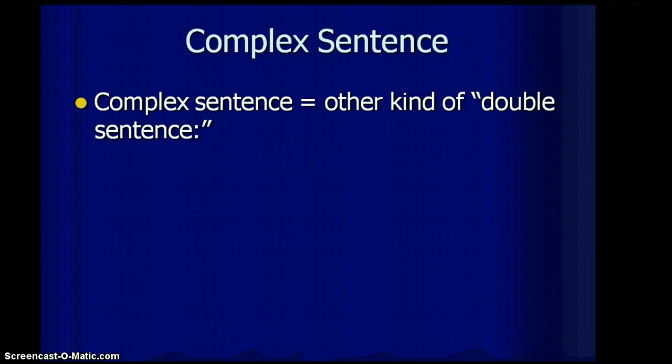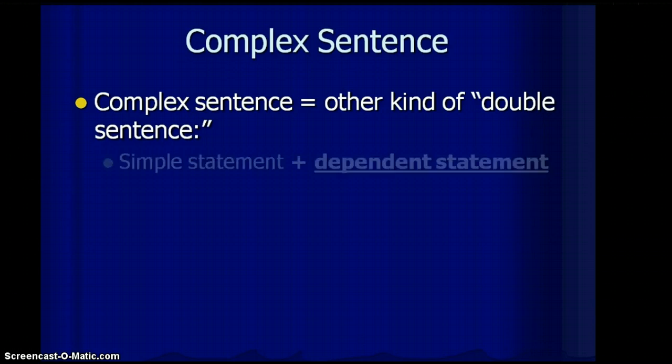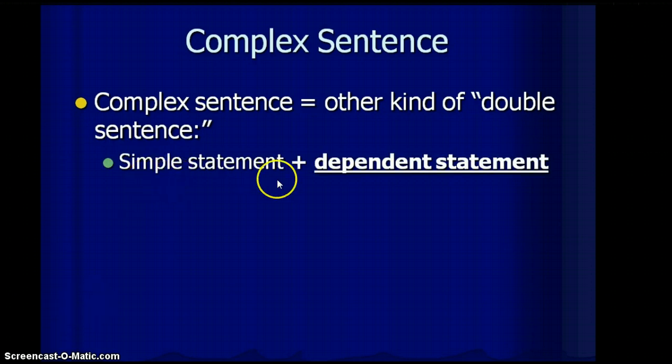It's another kind of double sentence. When I say double sentence, you should understand that the compound was our first double sentence in that it had two independent clauses. Well, the complex sentence also has two clauses. It has the independent clause, which is a simple sentence, and it also has a dependent clause or dependent sentence.